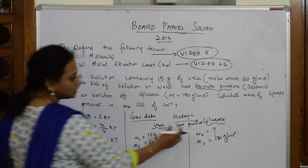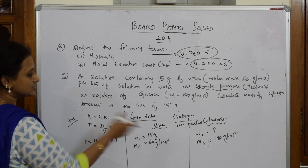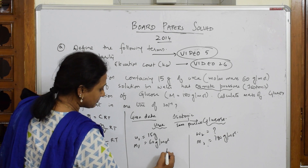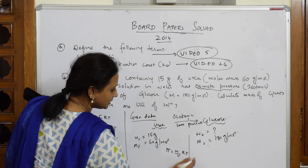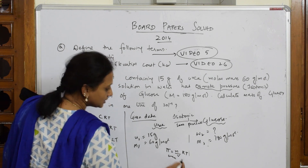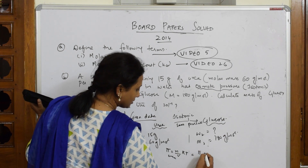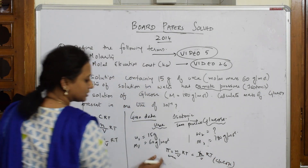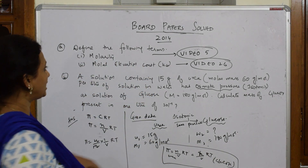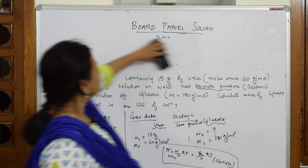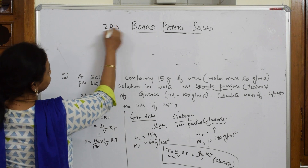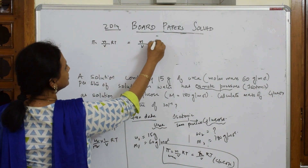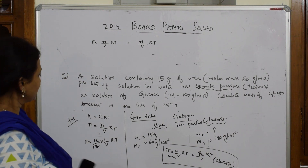Since both are isotonic in nature, that means same pressure, so I can equate the osmotic pressure formulas for both. I can write: π = (n/V)RT for urea = (n/V)RT for glucose, making both equal because the osmotic pressures are equal. Now substituting — n = weight / molecular weight.